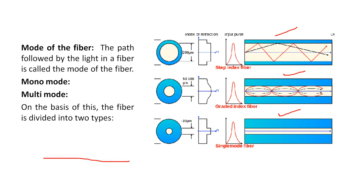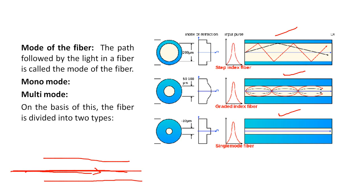As I have already discussed about the core of the fiber — for example, this is the core of the fiber, and this is the path followed by the light ray. If a second beam also moves from this path, and a third beam also moves from this path — if all the light rays move only through a single path, then that is known as single mode fiber, because it is the single path followed by the light ray. This is also known as monomode or single mode fiber.